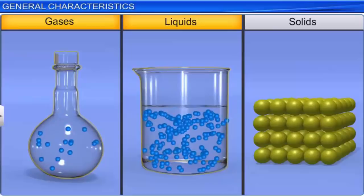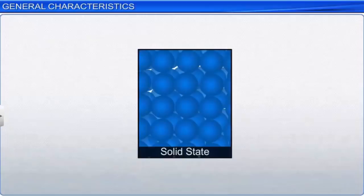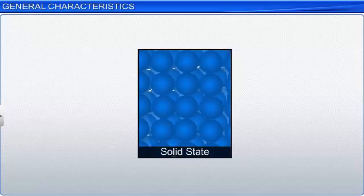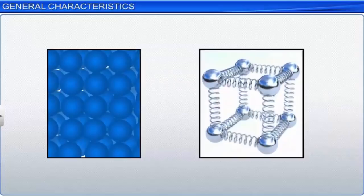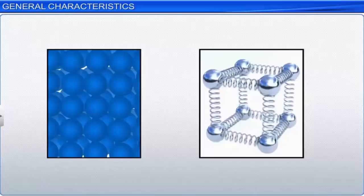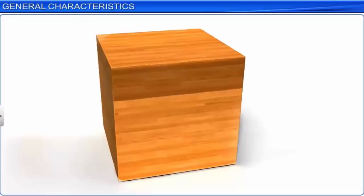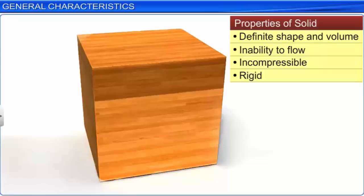On the other hand, the constituent particles in solids are held together by strong forces of attraction. In other words, the constituent particles are closely packed. However, these particles can still vibrate about their fixed mean positions. Solids possess characteristic properties: they have a definite shape and volume, lack the ability to flow, are incompressible, and are rigid.